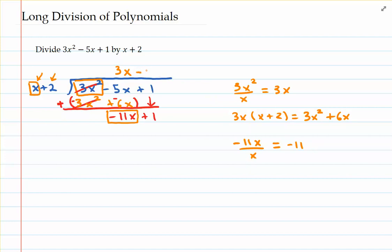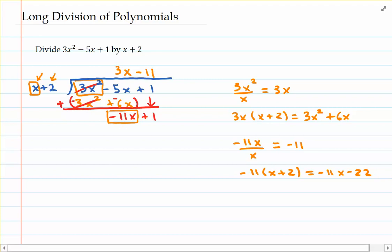So now it looks like 3x minus 11 on top of the division hut. Now take negative 11 and multiply it to the divisor of x plus 2. Scratch work for that. Distribution would give us negative 11x minus 22. And that's going to go underneath negative 11x plus 1.